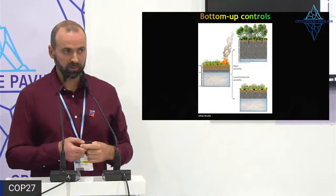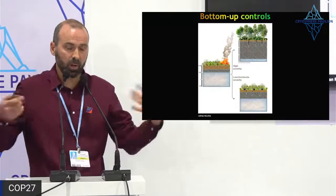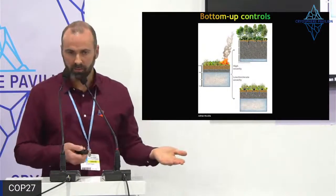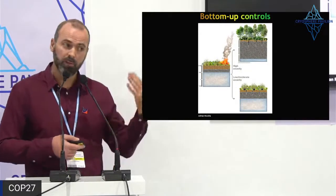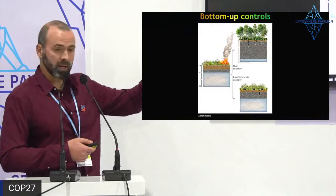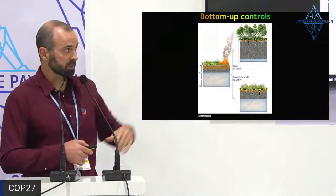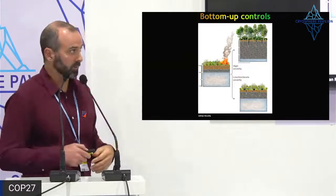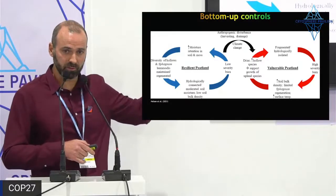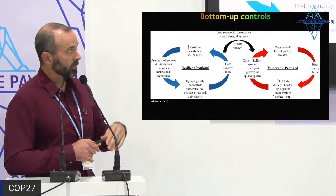Now for bottom-up controls: the ecosystem really affects what happens with fire. For tundra, there is evidence suggesting that with low-to-moderate severity fires, tundra systems are likely to recover. But with high-severity fires, you change the permafrost and hydrology, and different vegetation like shrubs and even trees — which tend to be much more flammable — can come in. That could be a self-reinforcing feedback for more and more fires in tundra systems.